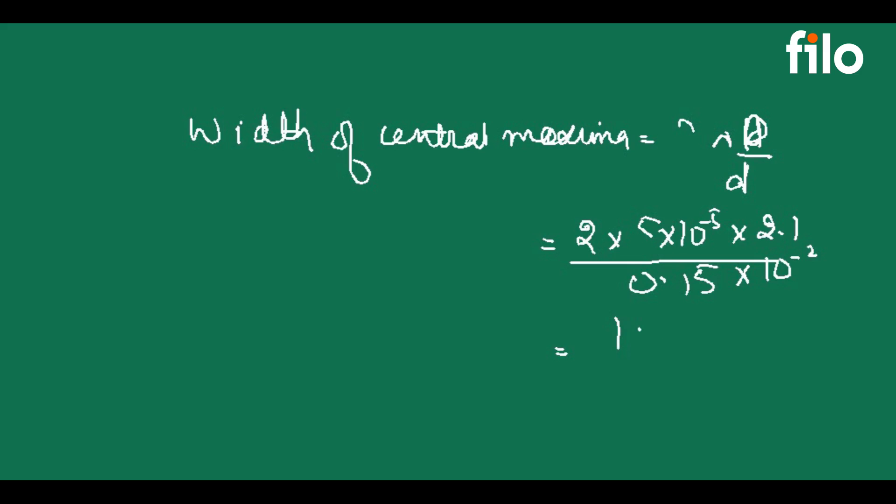Here it comes to 1.4 × 10 to the power minus three meter which equals 1.4 mm. So the width of central maxima is 1.4 millimeters.